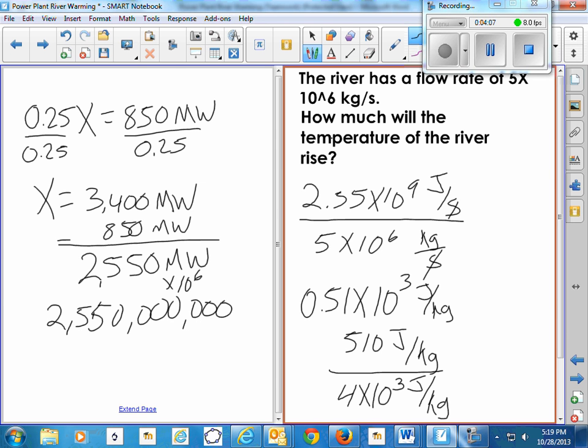And then per degree for the heat capacity, joules per kilogram. So we just have units of 1 over 1 over degrees, which is just degrees. I used 4,200 joules per kilogram, but anyways, that all comes out to be somewhere around a tenth of a degree.